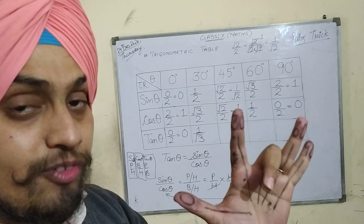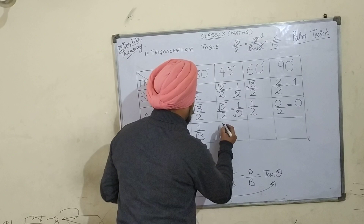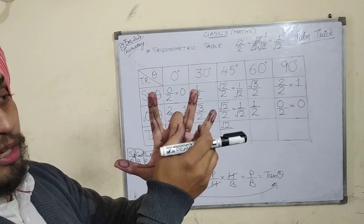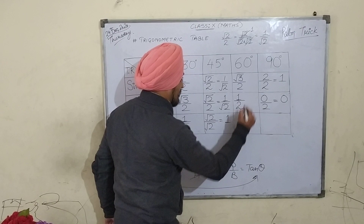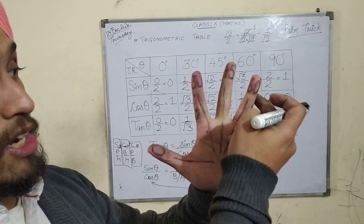For tan 45 degree, bend this finger. See how many fingers are to the left of it — 2 fingers. Take the square root of 2, which is √2. Now see how many fingers are there to the right of it — again 2 fingers. Take the square root of 2, which is √2. So √2 upon √2 — cancellation will take place and you will get 1, which is the value of tan 45 degree.